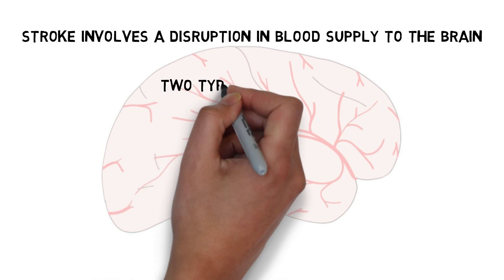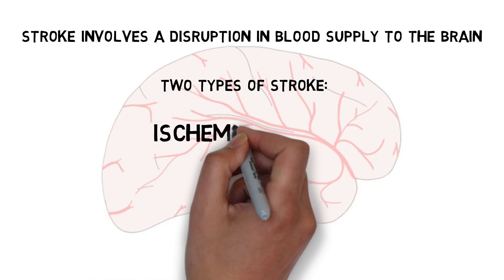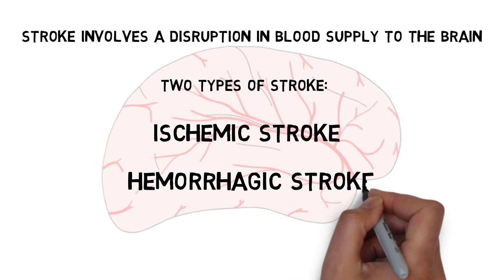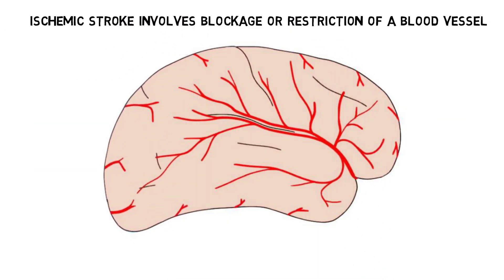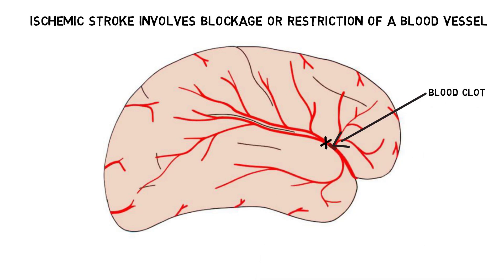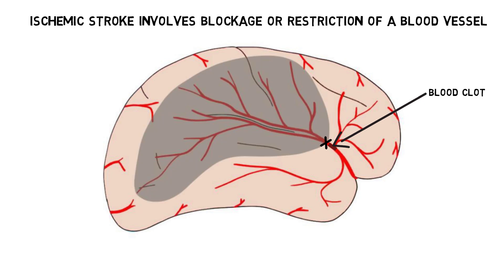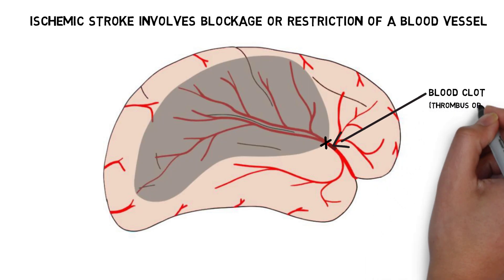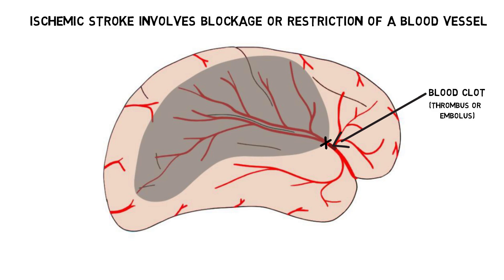There are two major categories of stroke: ischemic and hemorrhagic. Ischemia is a term that refers to a reduction in blood supply to a bodily tissue, and ischemic strokes occur when blood flow to a part of the brain is blocked or restricted. This is most commonly due to a blood clot blocking a blood vessel. When a blood clot forms in the same area where the blockage occurs, it is known as a thrombus. When a blood clot forms at a distant site and then travels to another part of the body or the brain to block a blood vessel, it is known as an embolus.